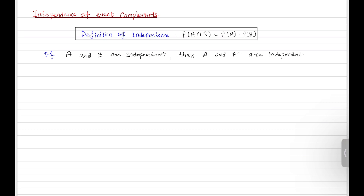How can we see this mathematically? Let's look at this. Suppose you have two events that are independent events — event A and event B. If I have to write event A, look at how we can write this with disjoint sets. There is one part and another part. Using sets, how can we write this complete event A?